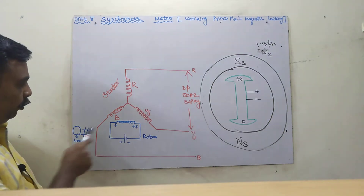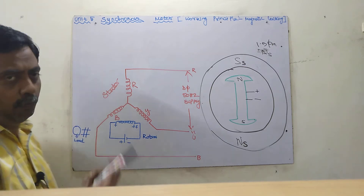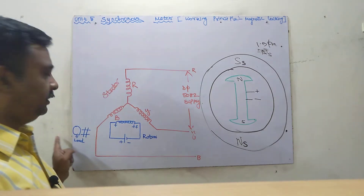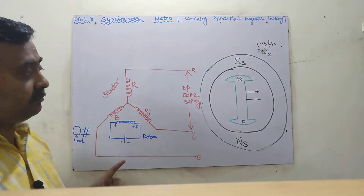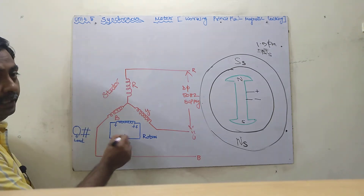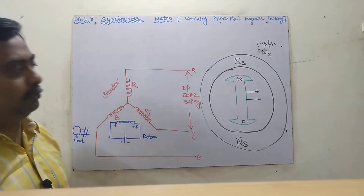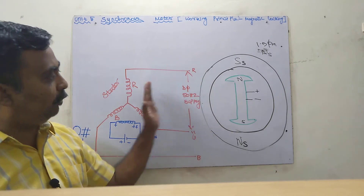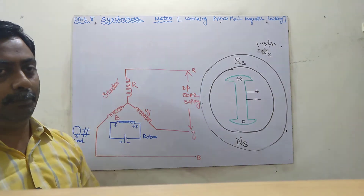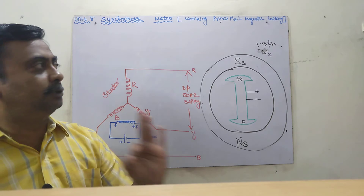The rotating load is coupled to the motor shaft. In a generator, a prime mover rotates the rotor and electrical energy is generated. In a synchronous motor, we give electrical supply and get mechanical output — this is the principle of working of a synchronous motor.